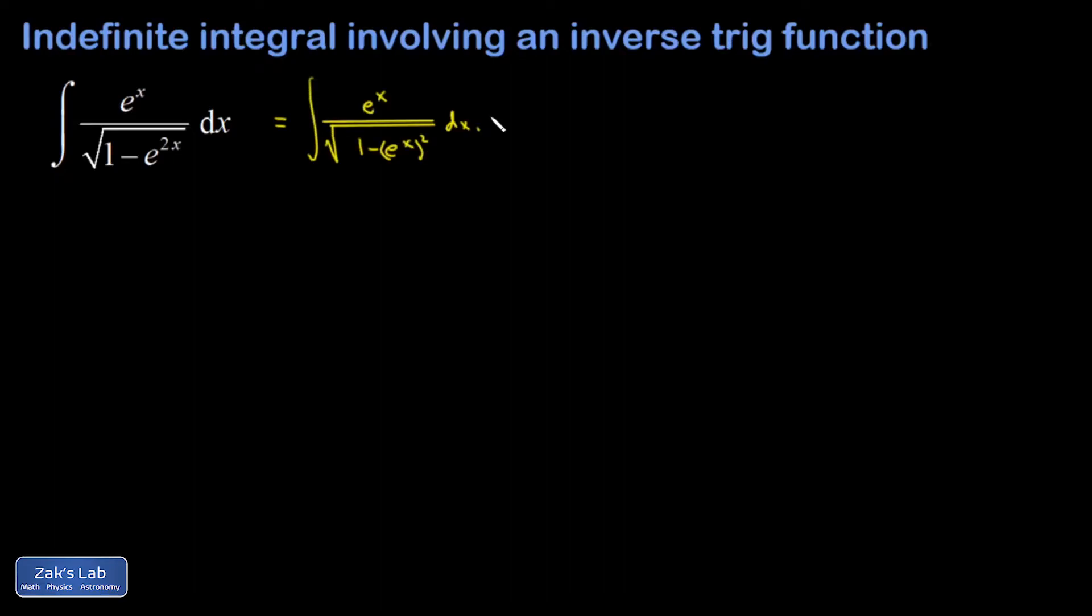And as soon as I write that as 1 over square root 1 minus something squared, it rings a bell about the derivative of the inverse sine function. Well this looks a heck of a lot like that except that I have an e to the x instead of an x.